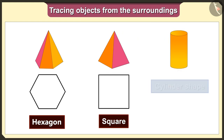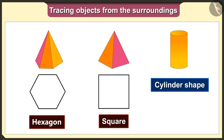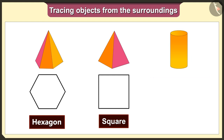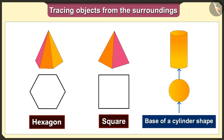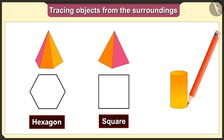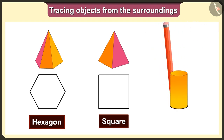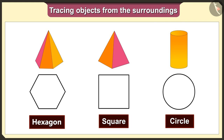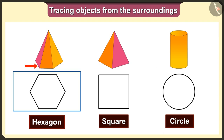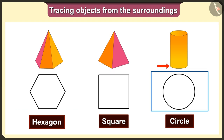Look, this is a cylindrical shape. The base of a cylinder is a circle, so we will get a circle shape when we trace the cylinder. So when we trace these solid shapes, we get hexagon, square, and circle according to their bases.